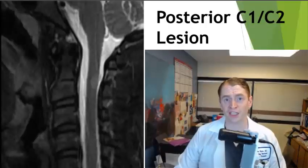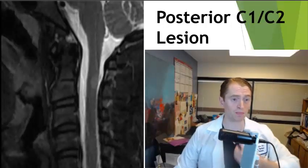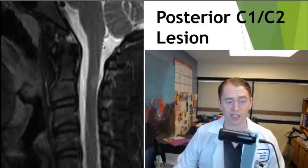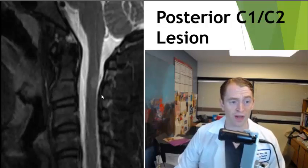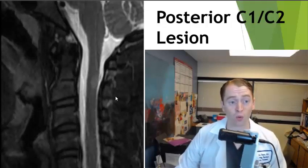This is a sagittal image of an MRI scan looking through the cervical spine. Here you can see the brainstem, the bones or vertebrae of the spine, and the discs in between. Here is the spinal cord, and this white area represents a lesion consistent with transverse myelitis in the back or posterior of the spinal cord at the C2 level.